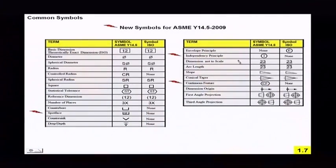Take a look at some other new symbols that we have. We have the independency principle, which is an I in a circle. That's new. And then we also have a continuous feature symbol, which is CF.